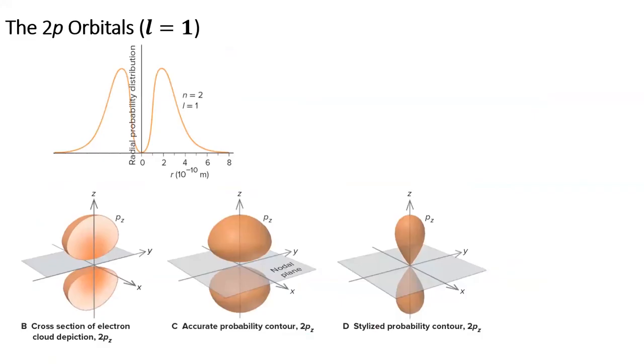This slide shows the electron density of a 2p orbital. Notice that there is a symmetric amount of density above and below the nucleus. The 2p orbital has a region of no electron density called a nodal plane that passes right through the nucleus and separates the two lobes of the p orbital.